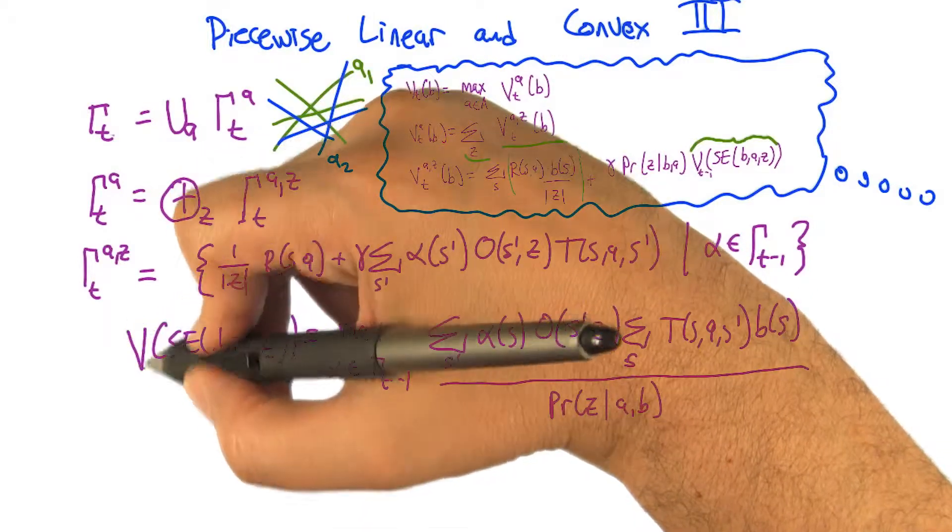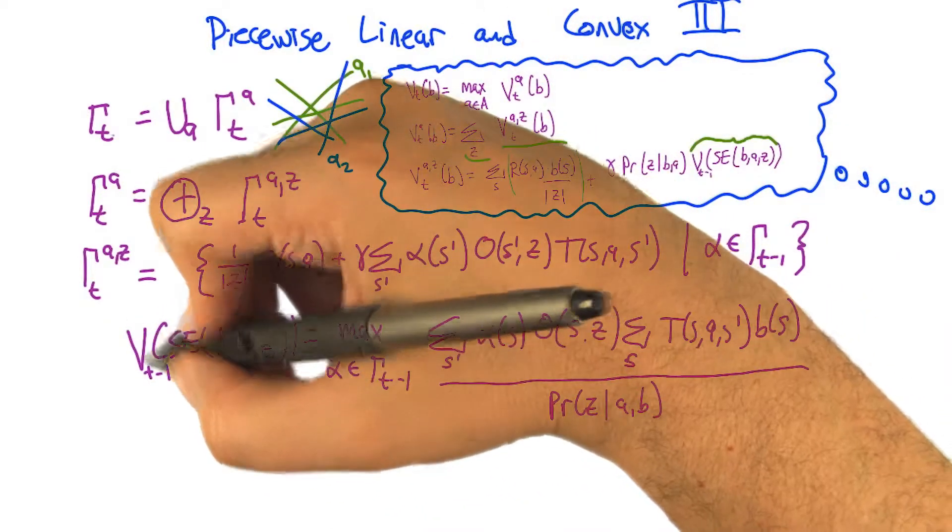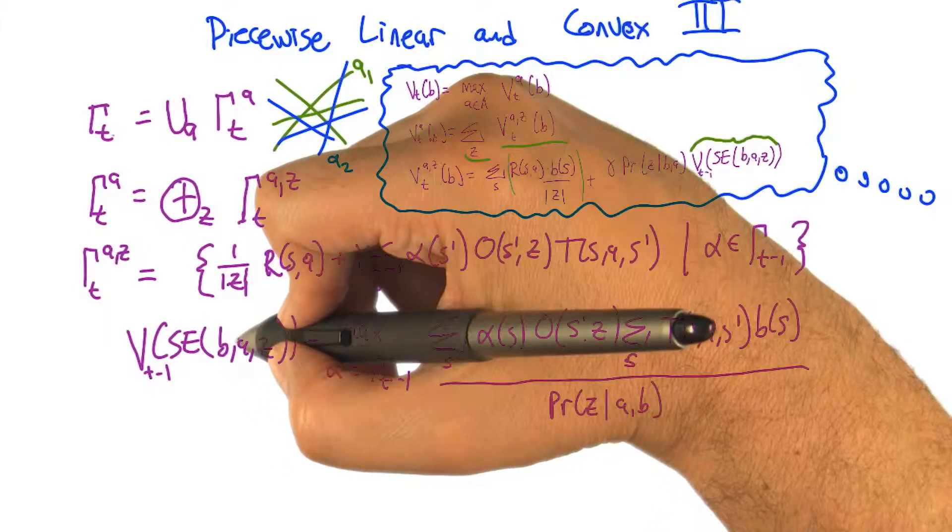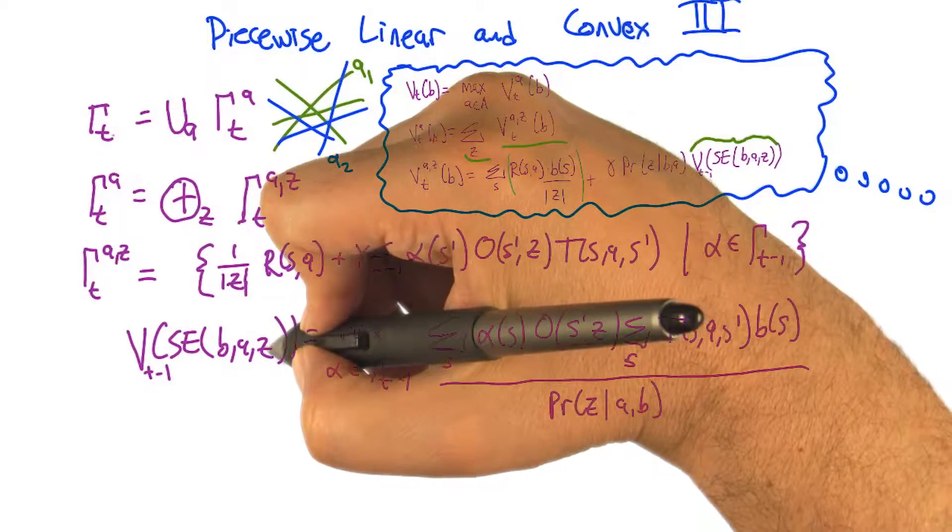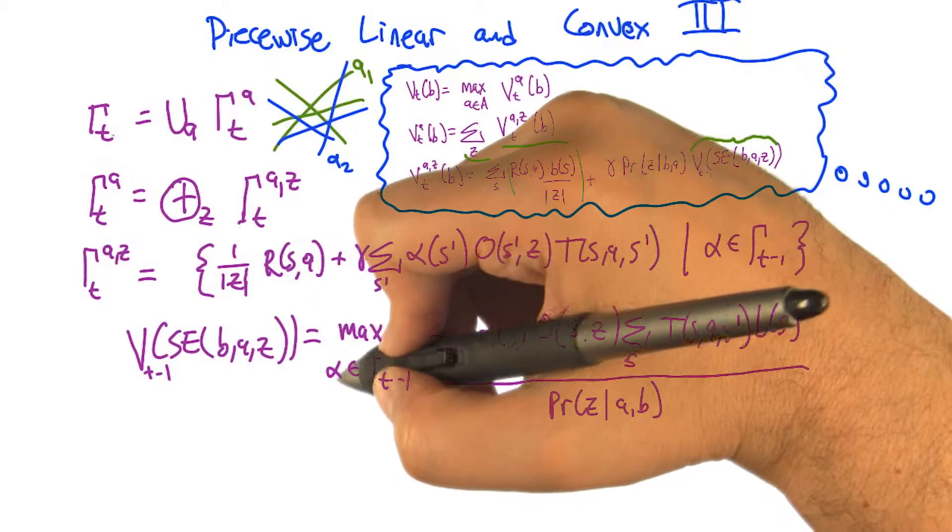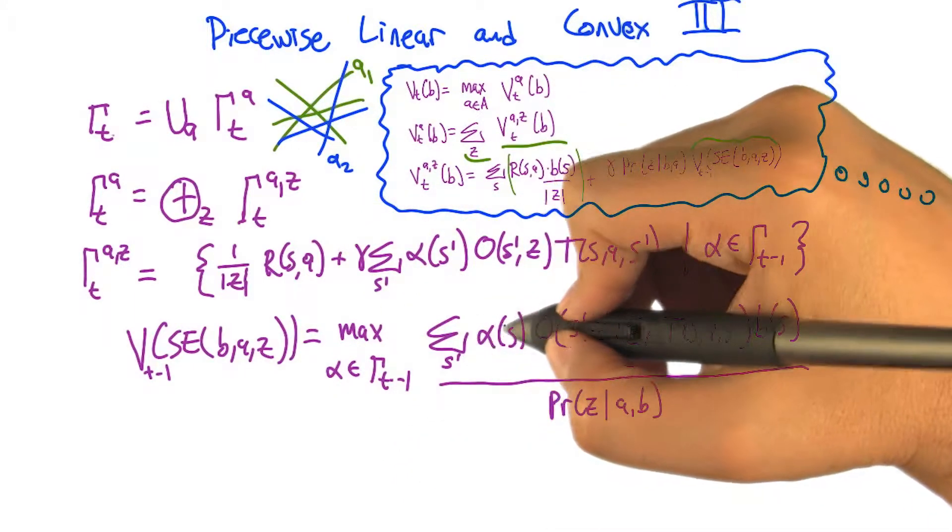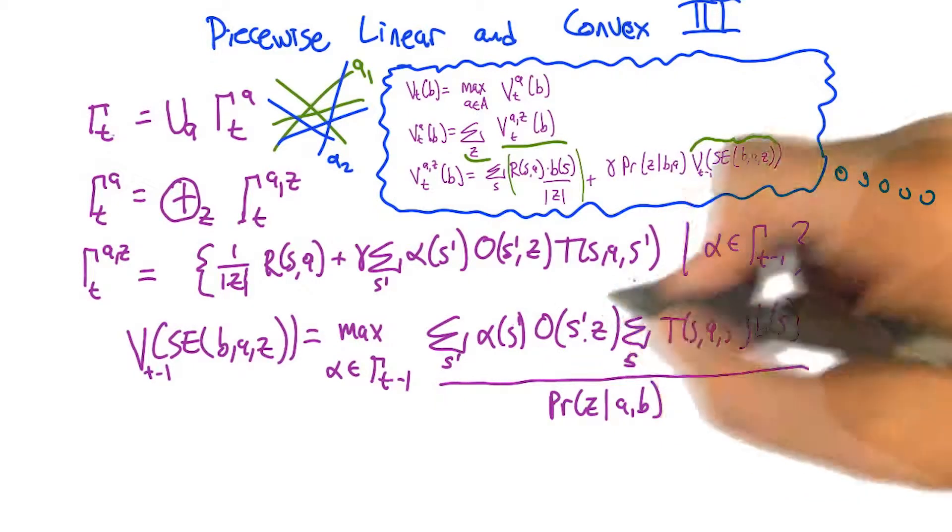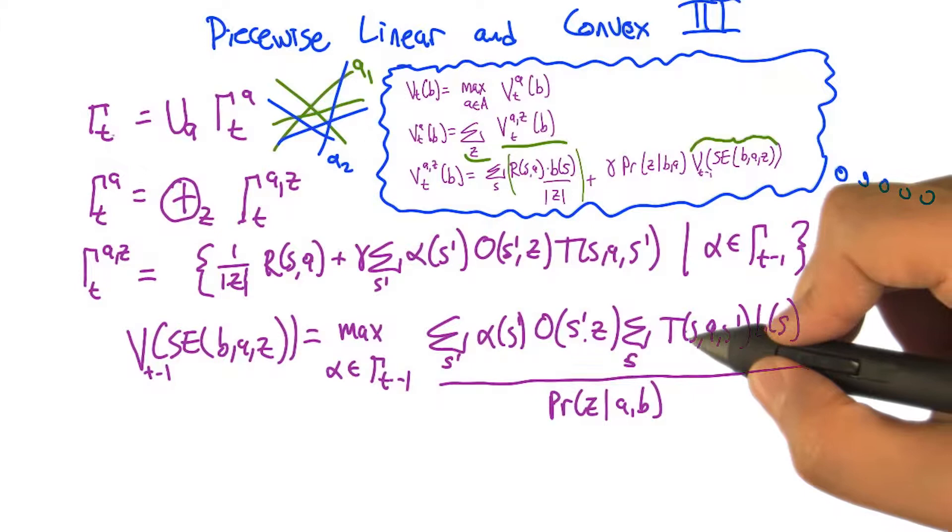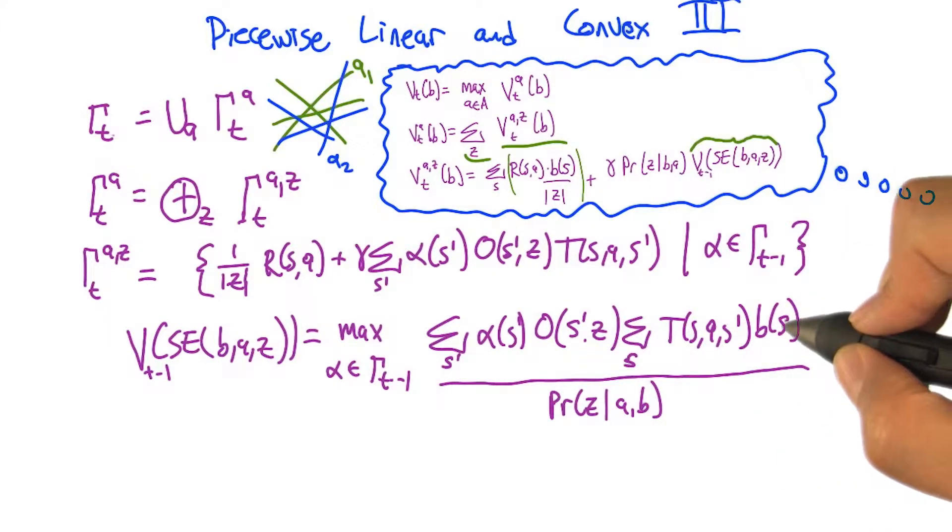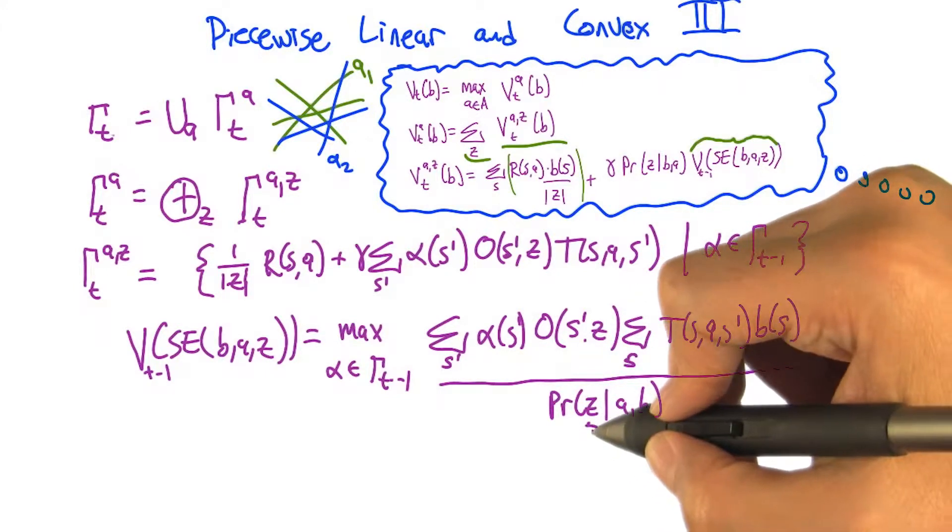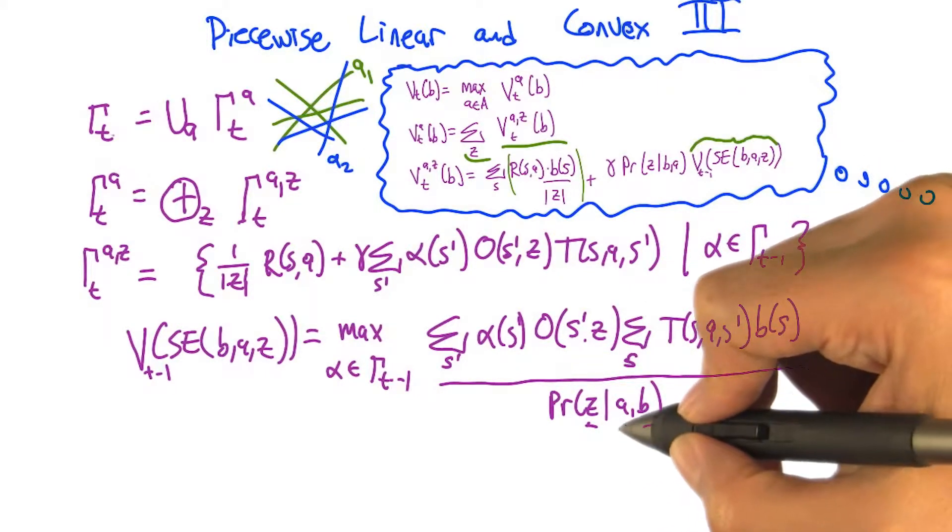We're going to say that the value, according to the t minus one time step value function, for the belief state that we get from taking action a and making observation z from belief state b, we can write this out as the maximum over all vectors in that set of the dot product of that vector with the resulting belief state, which we had previously derived to have this form. The observation function times the transition function times the belief state, and then normalized. And this normalization factor is the probability of making the observation z, given that we're in belief state b and action a.